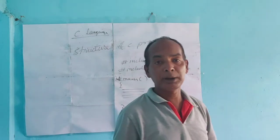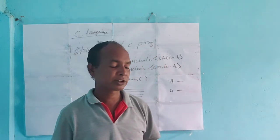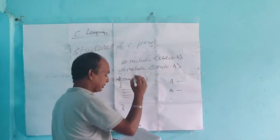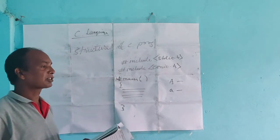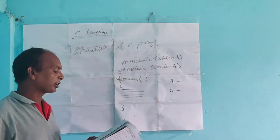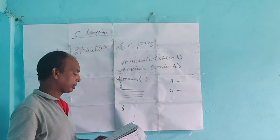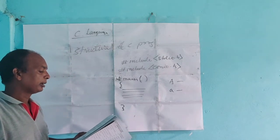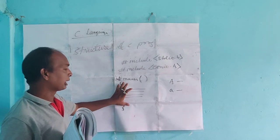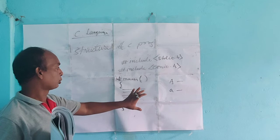The word 'main' is followed by parentheses because it is a function declaration. After the parentheses, the body of the main function is enclosed in a pair of curly brackets. These curly brackets contain statements that are translated by the C compiler from source code into object code, and then into machine code.